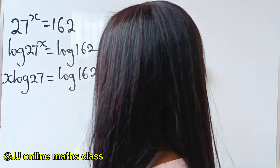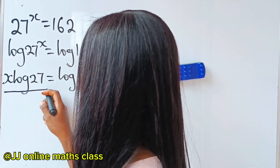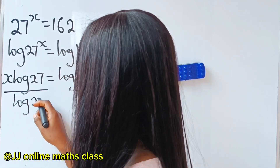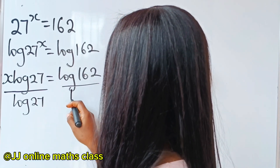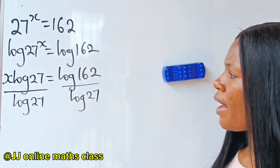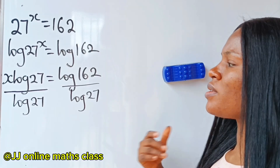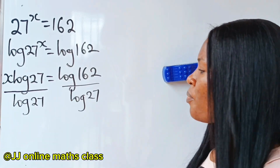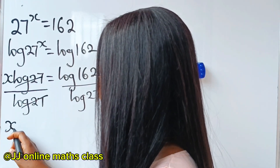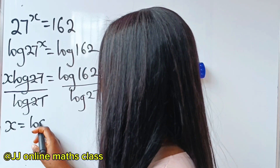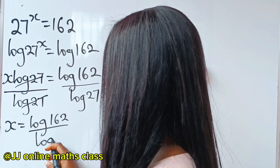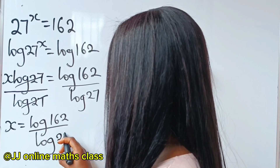Now looking at this, we divide both sides of the equation by log 27, because that is the only way to isolate x. Dividing, we get that x is equal to log 162 divided by log 27.